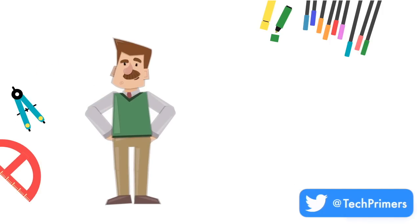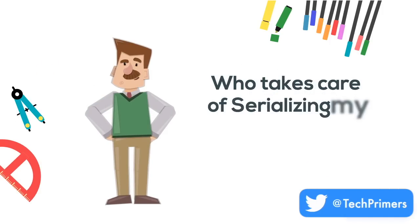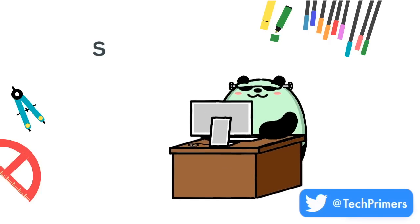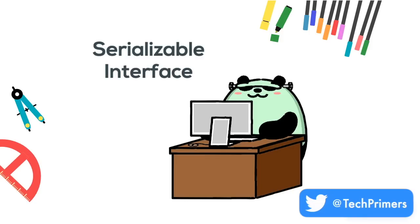The next question is: who takes care of serializing my objects — do I need to do it myself? The JVM takes care of serializing once we implement the interface called Serializable. Whenever an object implements the Serializable interface, the JVM takes care of serializing and deserializing it.